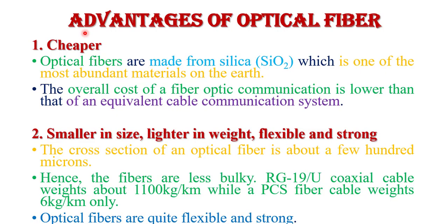First, I will explain the advantages of optical fiber. There are a number of advantages of optical fiber as compared to conventional copper wire cable. The first advantage is that it is cheaper. Optical fiber is made up of silica, which means SiO2. Silica is a sand-like material which is one of the most abundant materials on the earth, so it is very easily available. The overall cost of fiber optical communication is lower than the equivalent cable communication system.